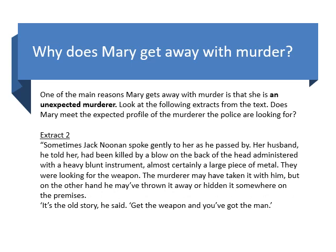Here's a second extract that we're also going to look at to show that she's an unexpected murderer. Sometimes Jack Noonan spoke gently to her as he passed by. Her husband, he told her, had been killed by a blow on the back of the head, administered with a heavy blunt instrument, almost certainly a large piece of metal. They were looking for the weapon. The murderer may have taken it with him, but on the other hand, he may have thrown it away or hidden it somewhere on the premises. 'It's the old story,' he said. 'Get the weapon and you've got the man.' Let's hear again and see if you can write down a few thoughts about this second extract — how do we know from this extract that they're clearly not suspecting Mary?